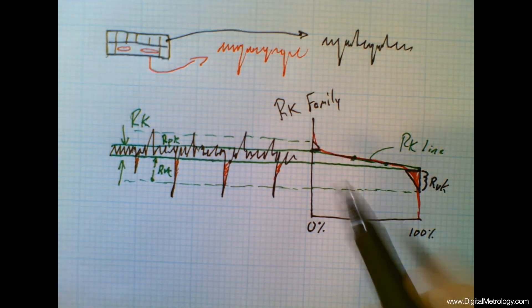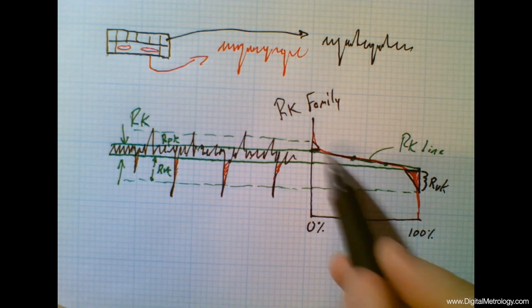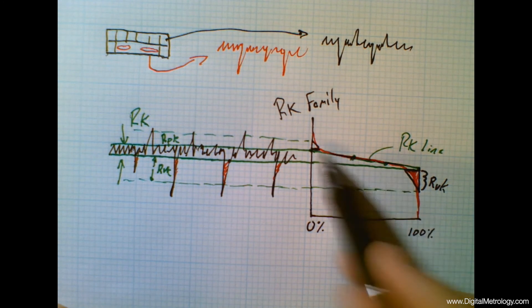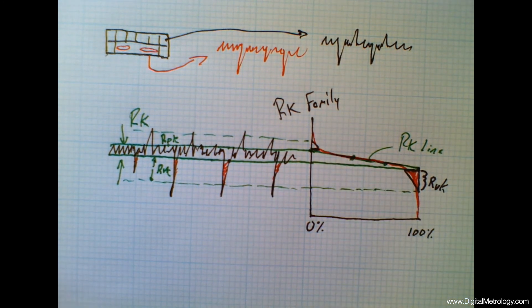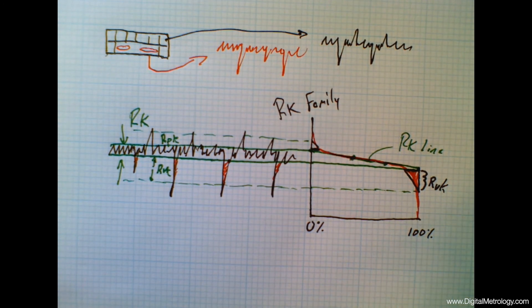Now there are some more numbers relative to the material ratios where these transitions occur, and there's more information on how we derive this line and these parameters. Check out digitalmetrology.com — let us know if you have questions and we'll be happy to help.